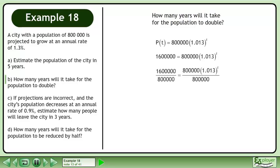Divide both sides by 800,000. This gives us the equation 2 equals 1.013 raised to the power of t.